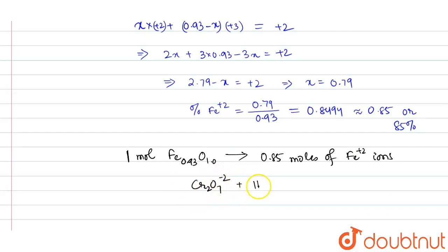In presence of acid H⁺, gives Cr³⁺ plus H₂O. Upon balancing the reaction, this is 14 H⁺, this is 2 Cr³⁺, this is 7 water, and 6 electrons are gained in this reaction.